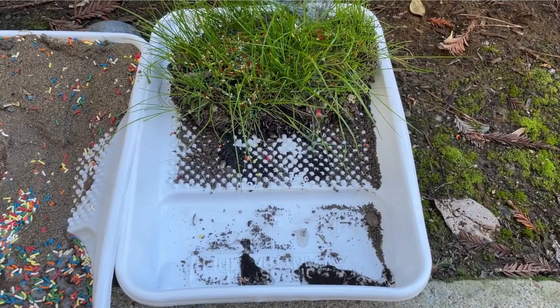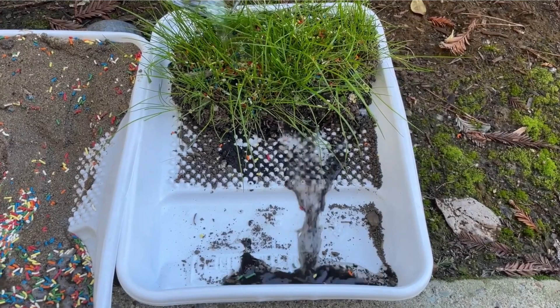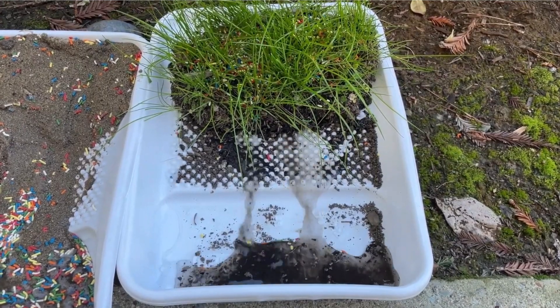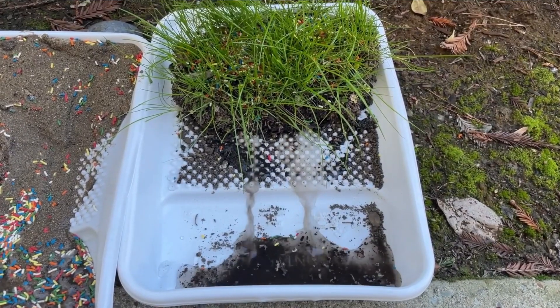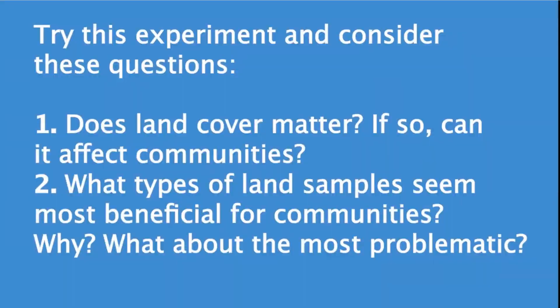Or is it somewhere in between? What happened to our pollutants, or sprinkles? Try this experiment and consider these questions: Does land cover matter? If so, can it affect communities? What types of land samples seem most beneficial for communities and why? What about the most problematic?